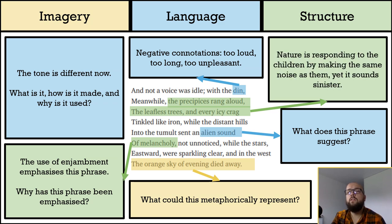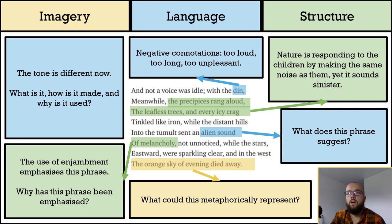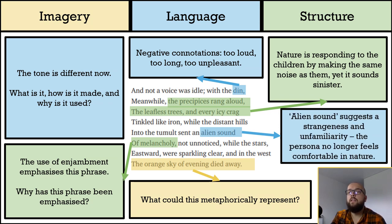Whereas before the sibilance was used positively, reflecting the sound of ice skating and Wordsworth's love for it, it is used very differently here. Nature is now responding to the children by making the same noises — in reality probably just echoes — but it now sounds sinister, highlighted by the words 'precipices' and 'leafless,' the last of which has connotations of death. 'Alien sound' suggests strangeness and unfamiliarity, implying the persona no longer feels comfortable in nature — a massive change from the poem's start.